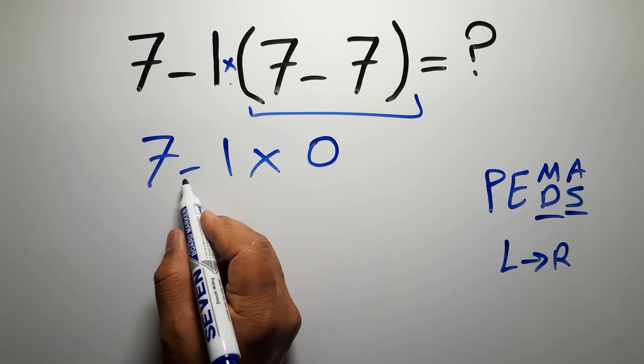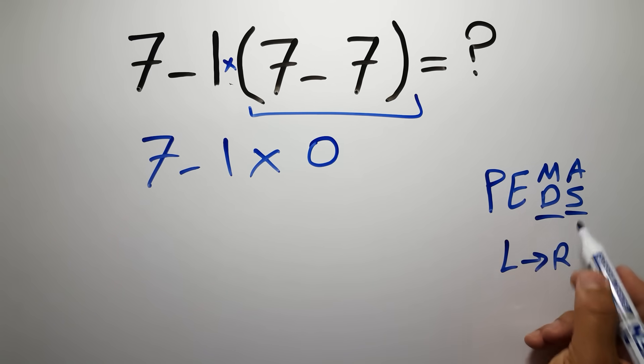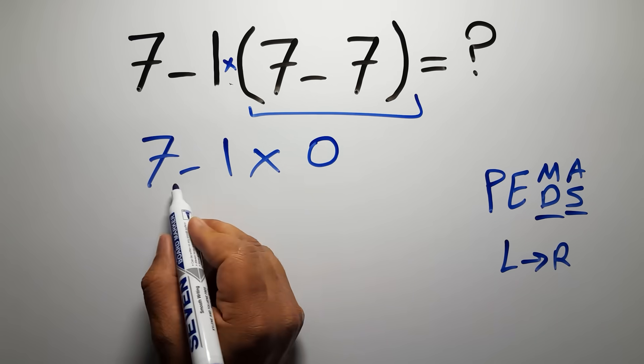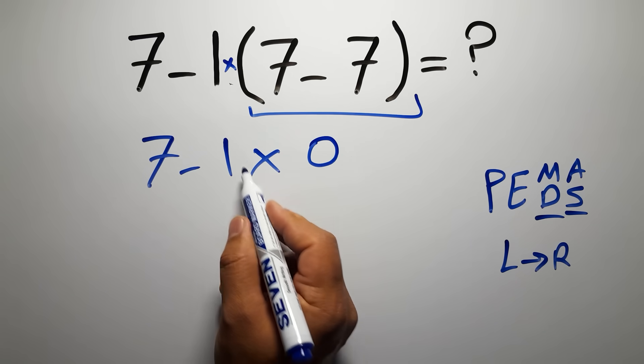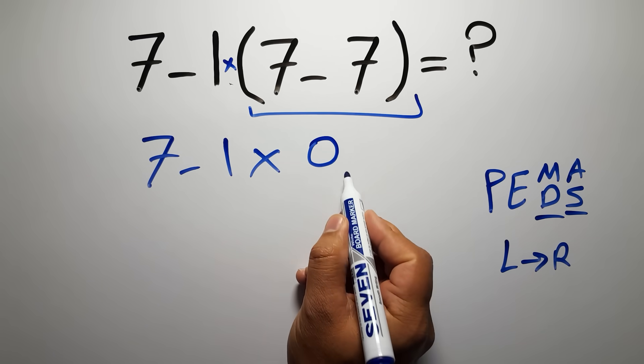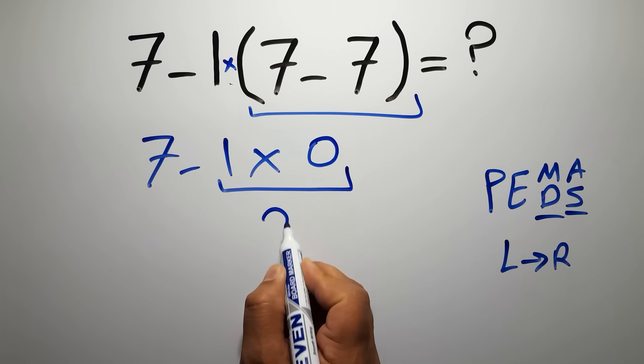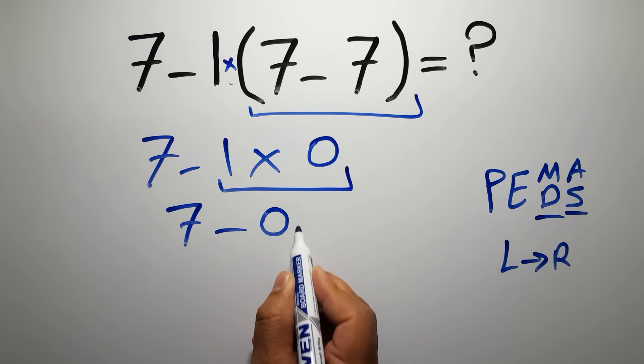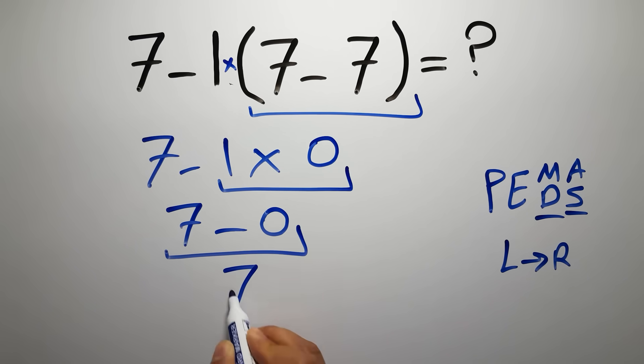According to PEMDAS, multiplication has higher priority than subtraction because multiplication comes before subtraction. So here first we have to do this multiplication: 1 times 0 equals 0. So 7 minus 0 which equals 7, and this is our final answer to this problem.